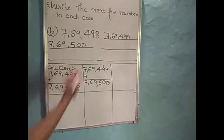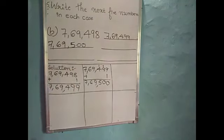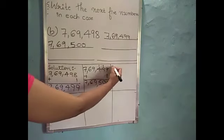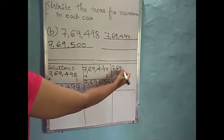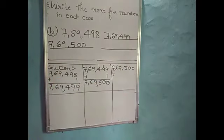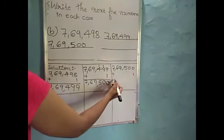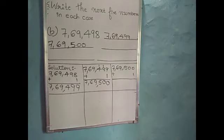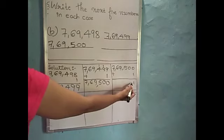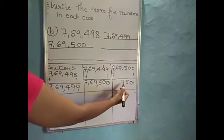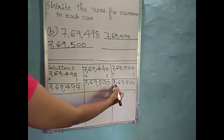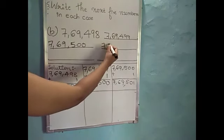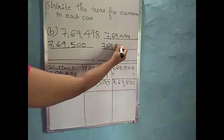We should add 1 to this number to get the next number. So I will write here 7,69,500. After that we should add 1: 0 plus 1 is 1. Write remaining numbers as it is: 0, 5, 9, 6 and 7. So the next number is 7,69,501.